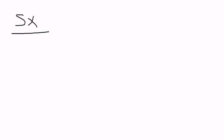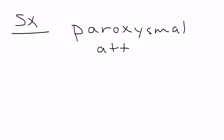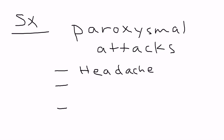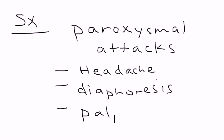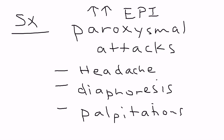You have a typical scenario of a patient that has paroxysmal attacks — they come and go. During these attacks, the first thing is headache, the second is tremendous sweating or diaphoresis, and the third is palpitations. There are many other symptoms from elevated catecholamines such as epinephrine and norepinephrine, but one that's very characteristic is very high blood pressure — hypertension.